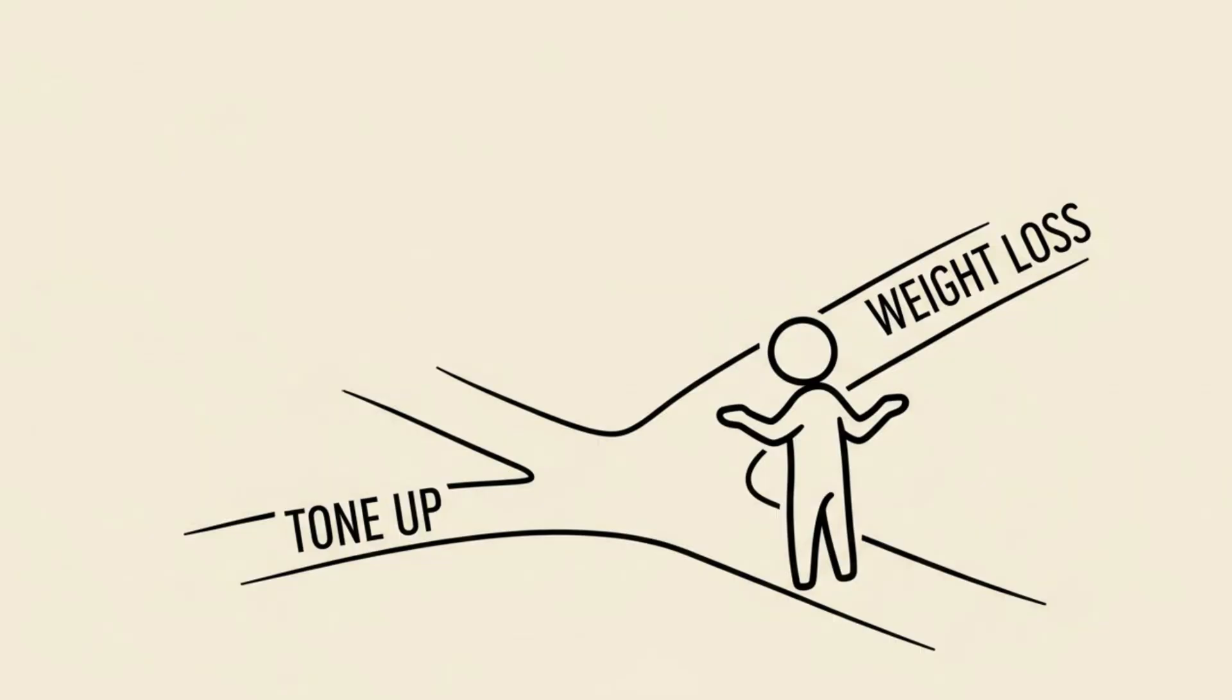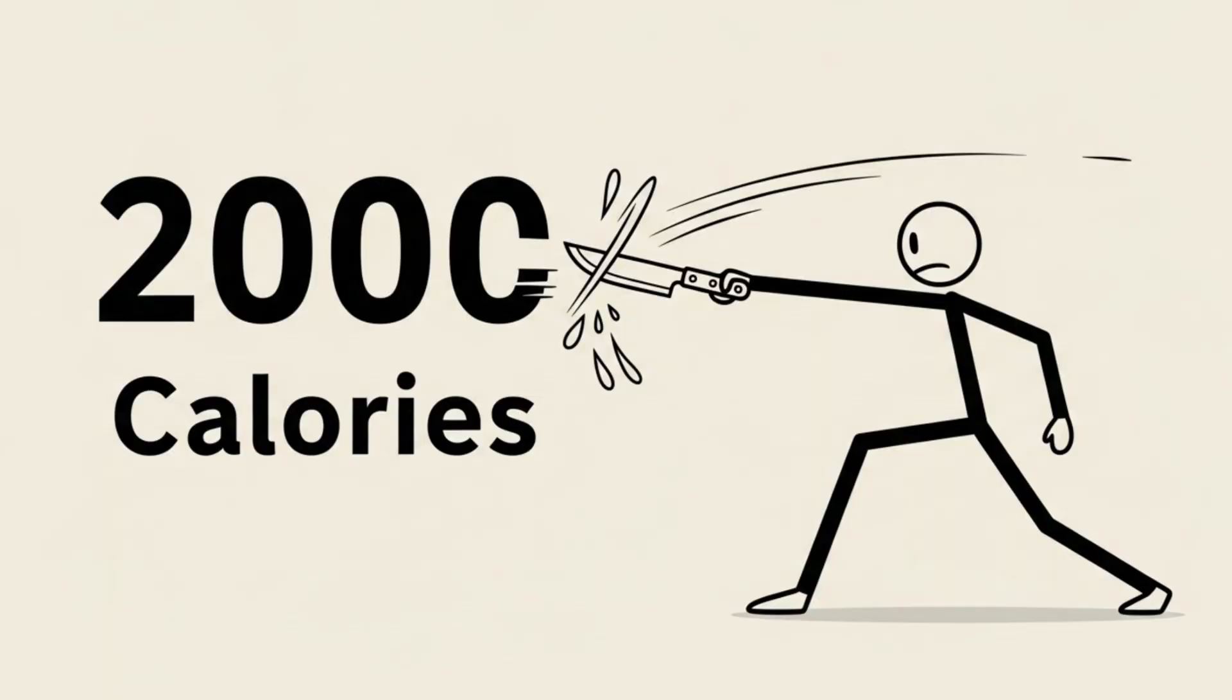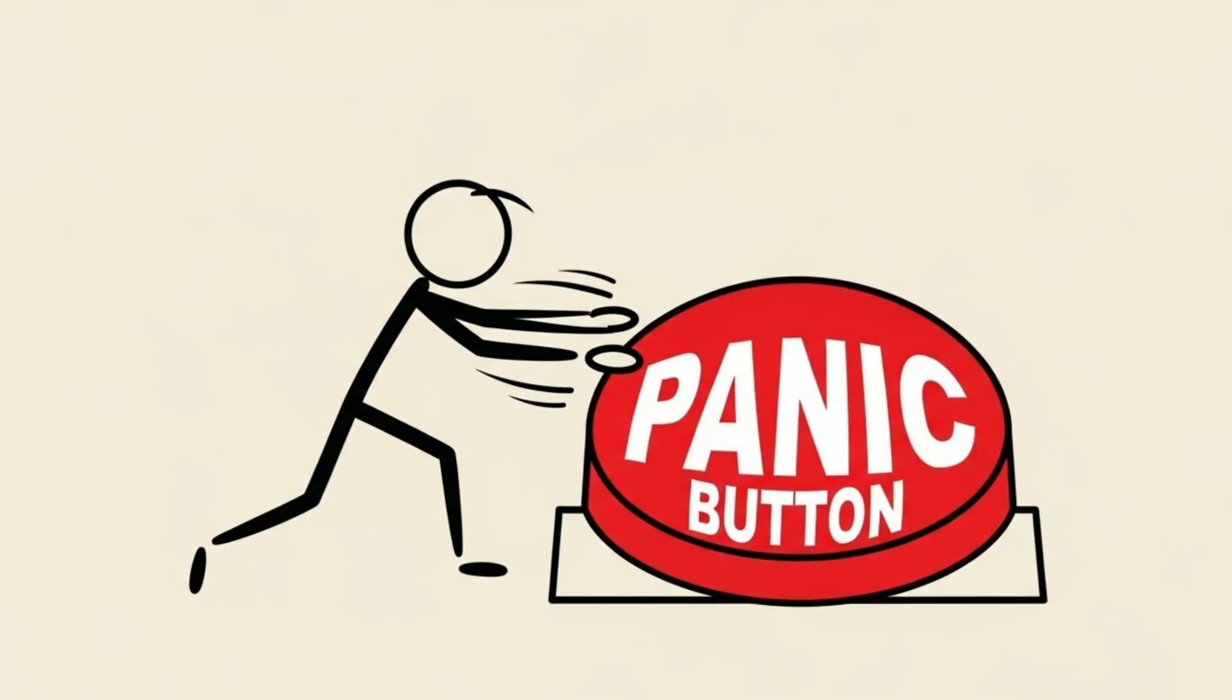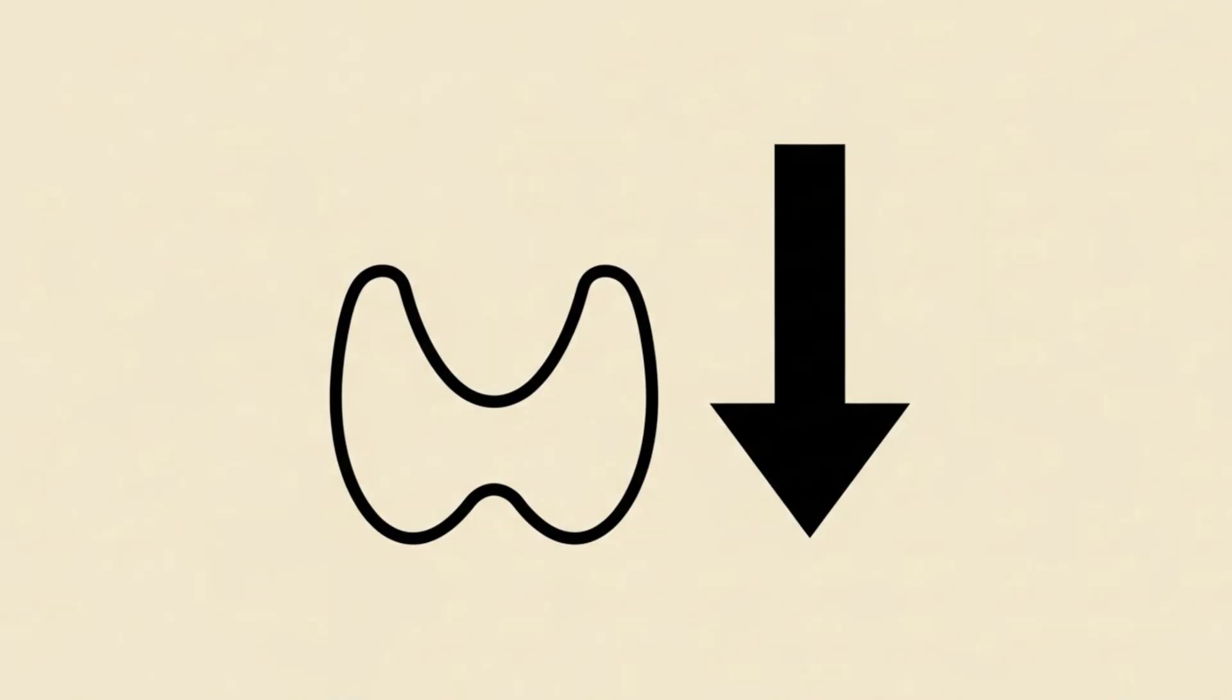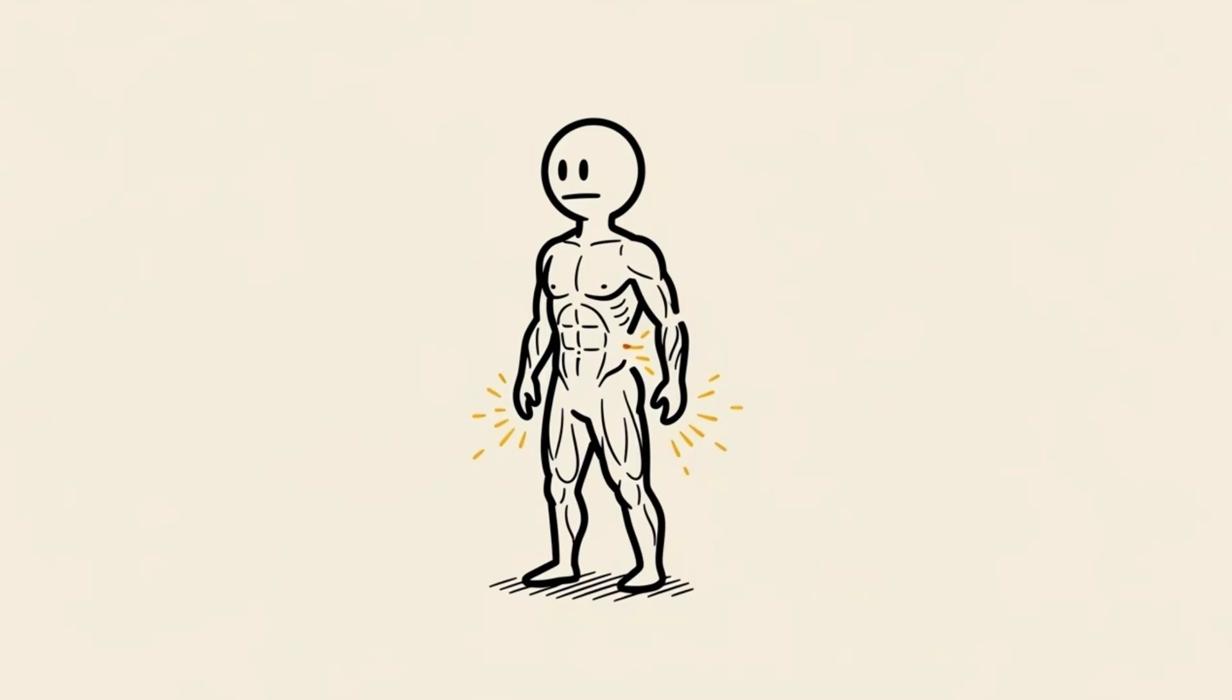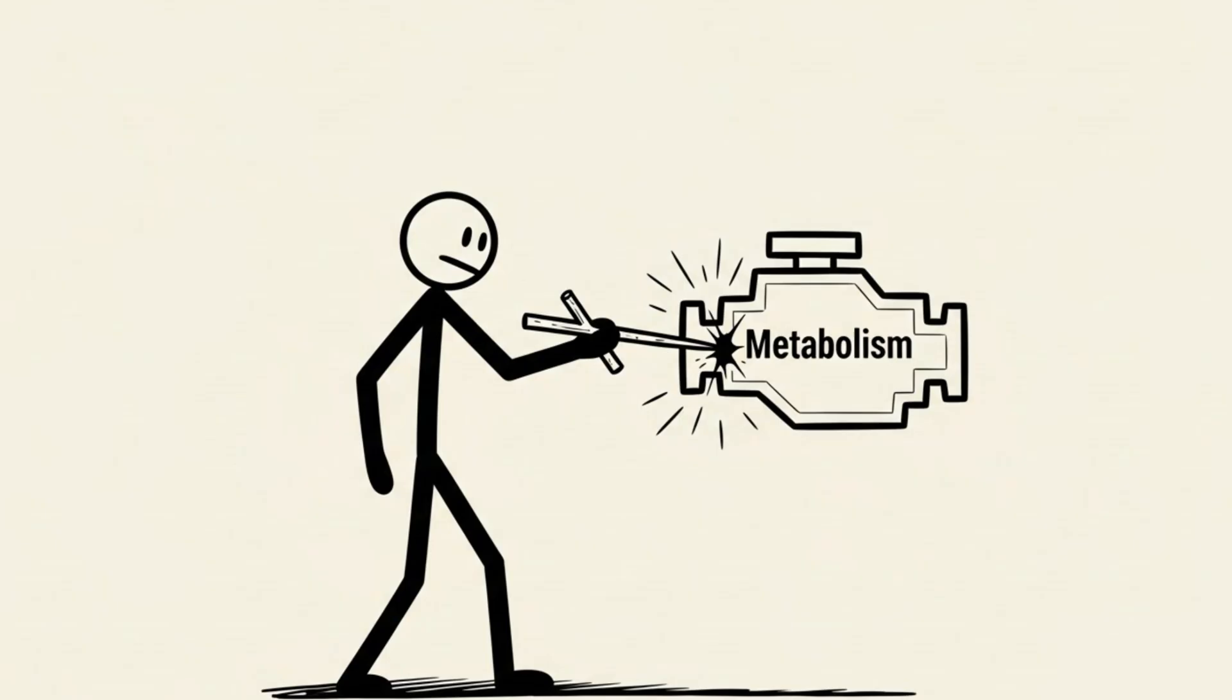However, here is where the tone-up strategy differs from a weight loss strategy. If you slash your calories too aggressively, say cutting 1000 calories overnight, your body hits the panic button. It doesn't know you want abs. It thinks you are starving in a famine. So it down-regulates your thyroid production and makes you lethargic to conserve energy. Worse, it starts breaking down muscle tissue for fuel. When you lose muscle, your BMR drops. You are sabotaging your own engine.